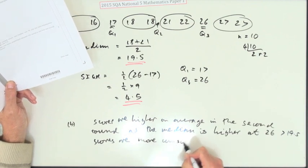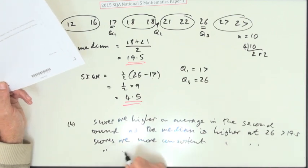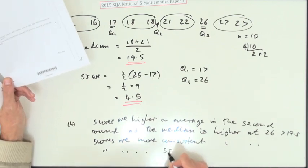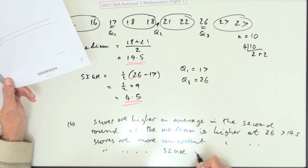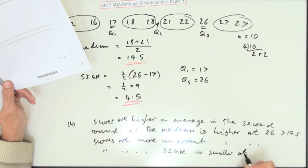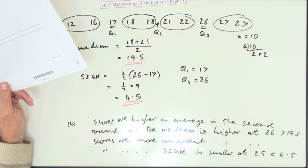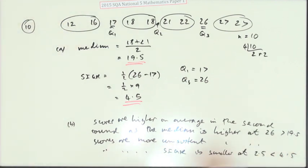More consistent in the second round, as the, who told me that? As the semi-interquartile range is smaller at 2.5, which is of course less than 4.5.